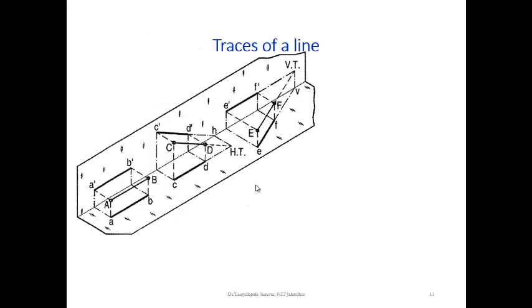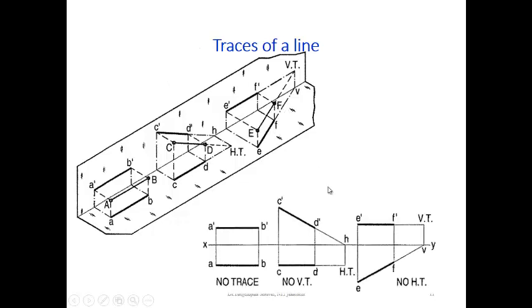To develop the traces of a line: if the line is parallel to both planes, there are no traces, because a trace is defined as the intersection of the extension of the line with a plane. If the line is inclined to the horizontal plane, a horizontal trace can be drawn, but since it is parallel to the vertical plane, there is no vertical trace. If the line is inclined to the vertical plane, it is extended to the vertical plane and the intersection point is called the vertical trace; since it is parallel to the horizontal plane, there is no horizontal trace. Both parallel — no trace; parallel to the vertical plane — no vertical trace.